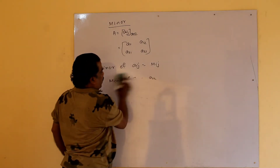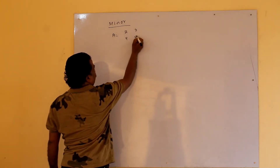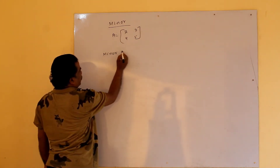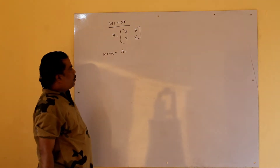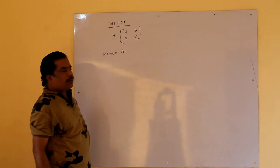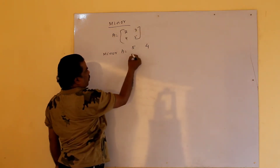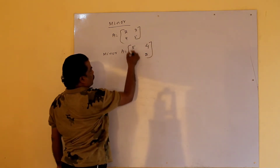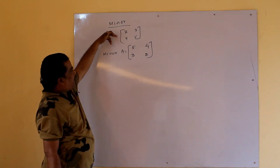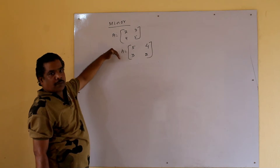Let us see an example. A matrix is given: A = [2, 3; 4, 5]. To find minor of A11, we delete the first row and first column, leaving A22 = 5. For minor of A12, we delete first row and second column, leaving 4. And so on for all elements of the matrix — when finding the minor, we first delete the rows and columns it is present in.